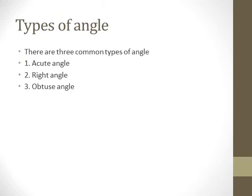Now the types of angles. We are discussing three common types of angle: the first one is acute angle, the second one is right angle, and the third one is obtuse angle. In the next slides we will study each of these angles.